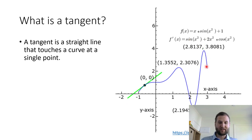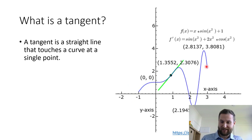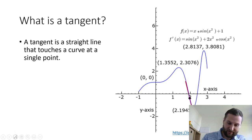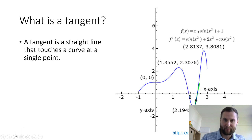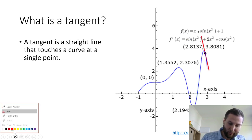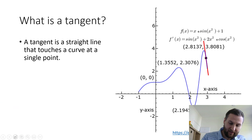So a tangent line is just a straight line that touches a curve at exactly one point — a single point. Tangent comes from 'tangentum', which means to touch. So if you have a line that's touching a curve at only one point, then it has to be a tangent line.